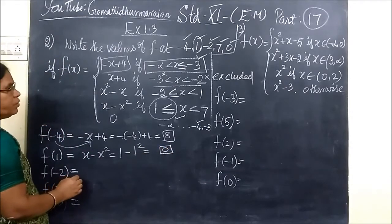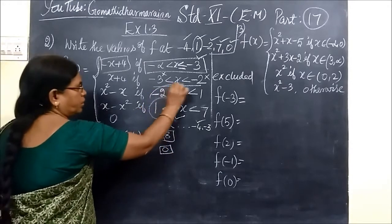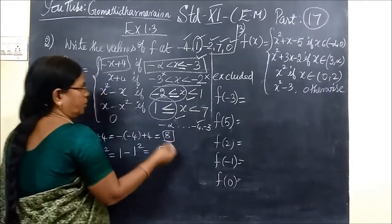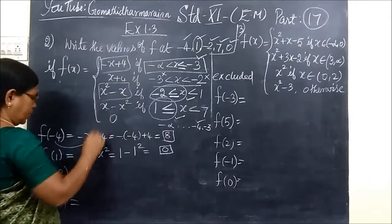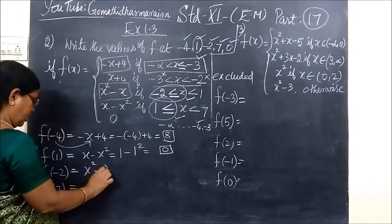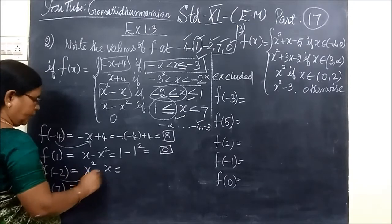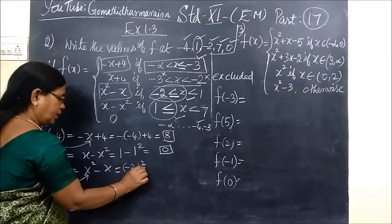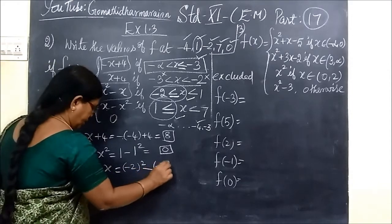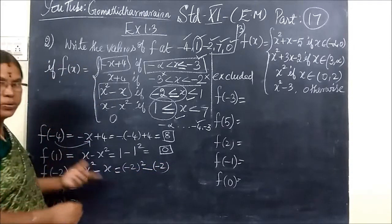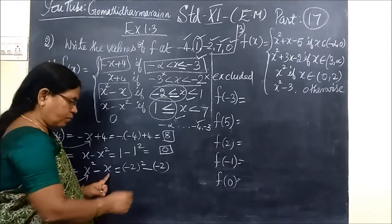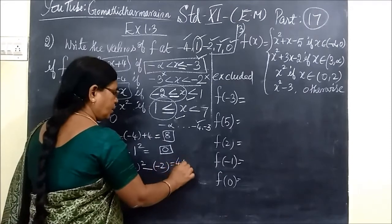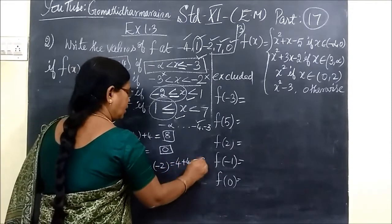Then f of minus 2. Minus 2 is here because of the equal sign — equal sign means you can consider it. So you are taking x squared minus x. For x you are substituting minus 2. So minus 2 squared minus minus 2. That gives 4 plus 2. So the answer is 8.